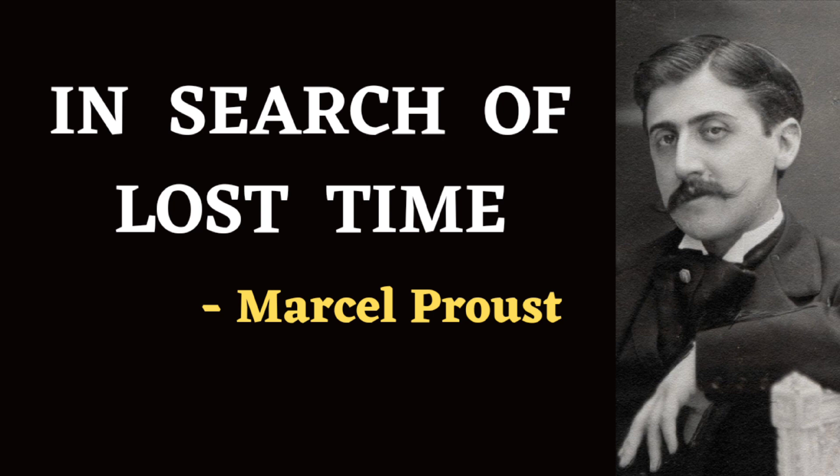In Volume 4, titled Sodom and Gomorrah, takes a deeper dive into the social circles and intimate relationships of the characters introduced in the previous volumes. Set against the backdrop of Parisian high society, the novel explores themes of sexuality, desire and societal norms. Marcel Proust delves into the complexities of human relationships, particularly through the lens of same-sex attraction and the hidden desires that lurk beneath the surface of polite society. Through richly detailed prose and psychological insight, Proust offers a profound exploration of the human condition and the intricacies of desire.